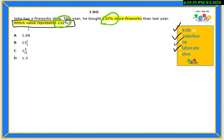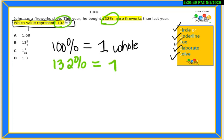Our final step is to solve. I am looking for an equivalent form of 132% as a fraction or a decimal. We know that 100% is equal to one whole number. If we have 132%, this equals one whole with 32%.